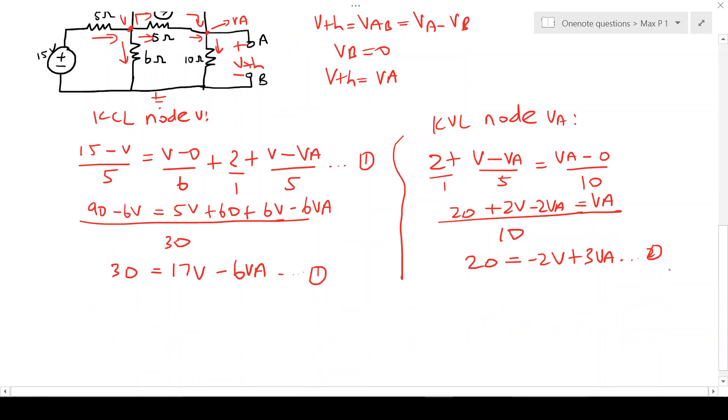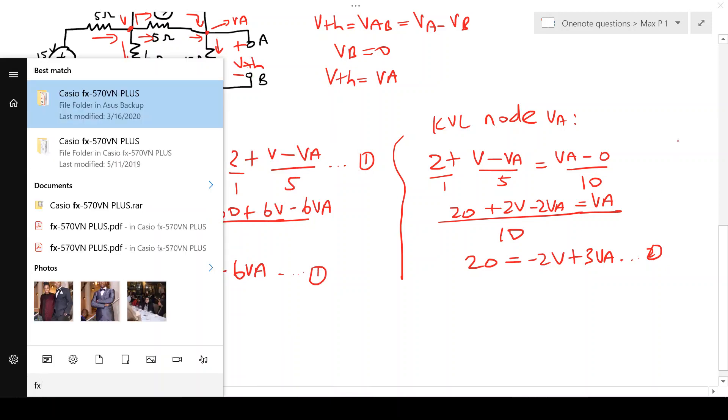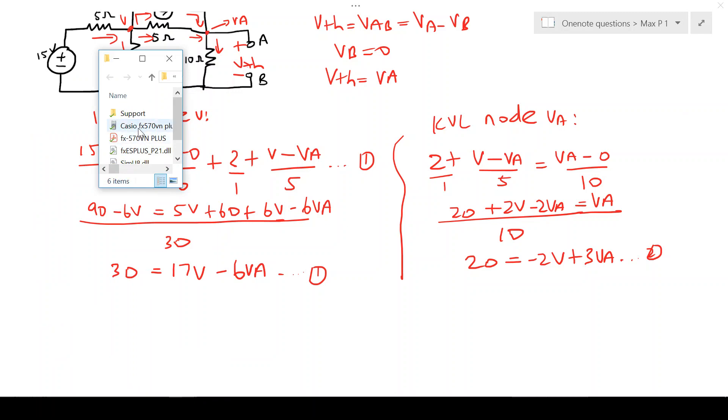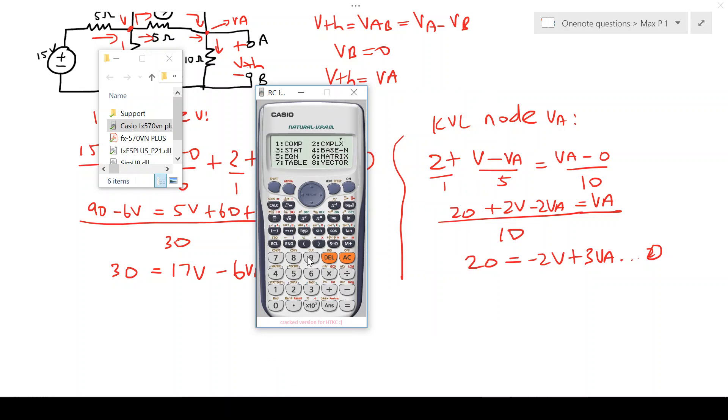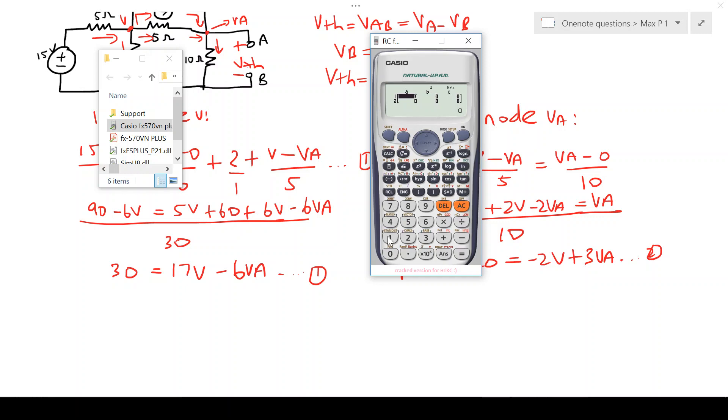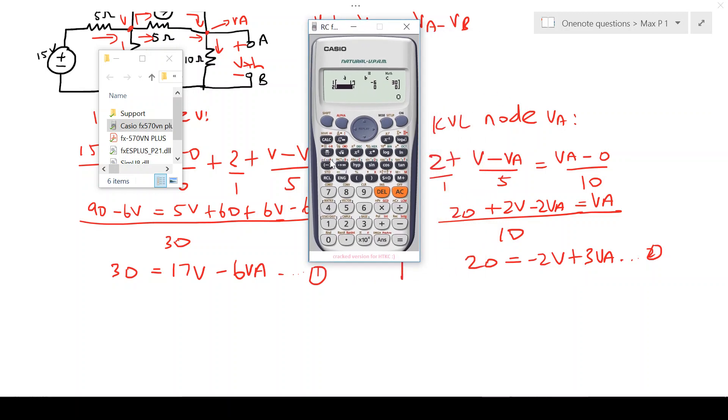Now we can plug this into our calculator. We will put on equation mode and we will say 17V minus 6VA equals 30 and minus 2V plus 3VA equals 20.